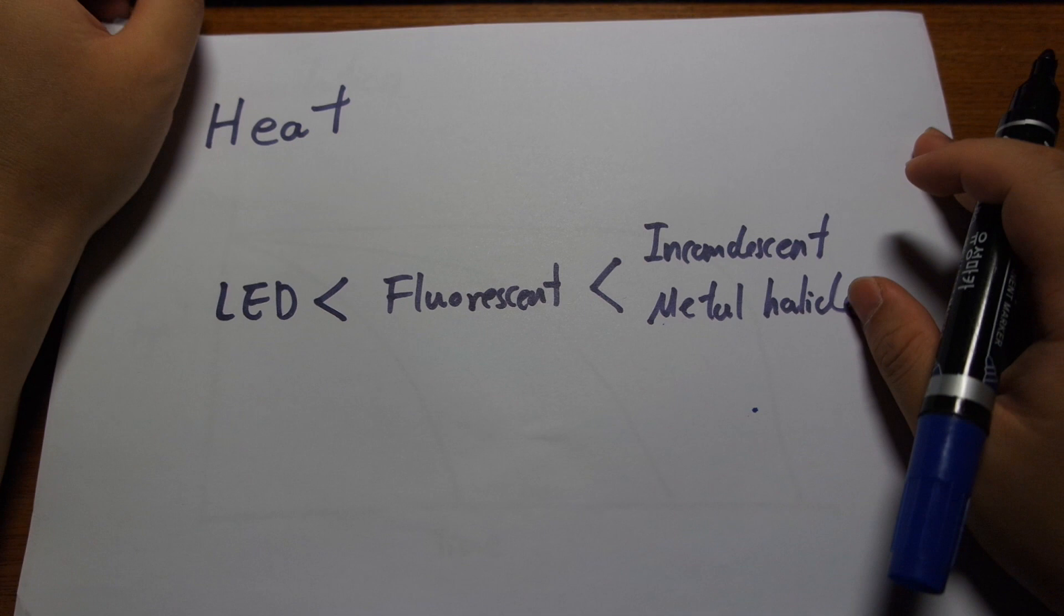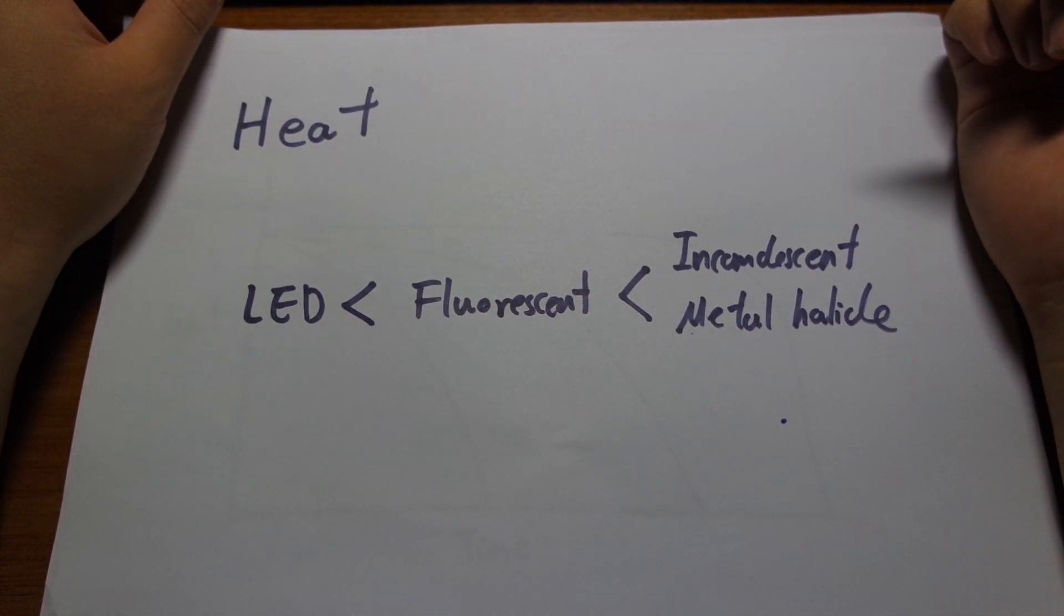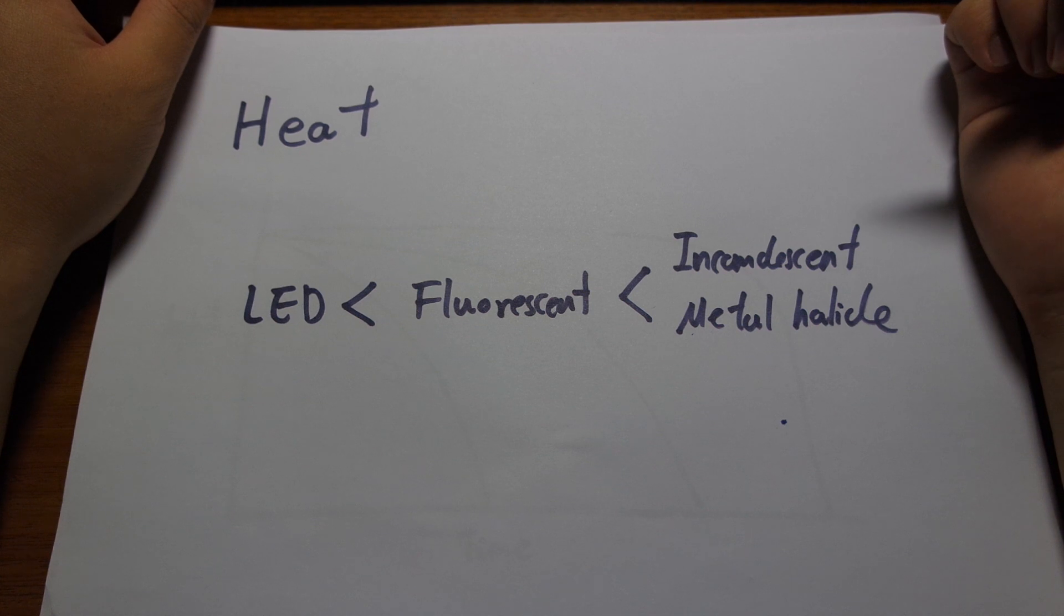And in terms of heat, how much heat a light bulb produces is also important because if it produces too much heat, that limits how close you can place the light to the tank, and also it makes it a bit trickier to handle. LEDs by far produce the least heat. It is the only light bulb that you can actually touch. I have my LED setups, I can turn it on for hours and touch it without fear of getting burned. That is not true for any of the other light bulbs. You do not want to touch light bulbs that have been on for hours. Trust me.